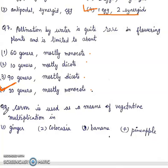Question 8. Corm is used as a means of vegetative multiplication in: 1. ginger, 2. colocasia, 3. banana, 4. pineapple. Right answer will be 2nd, colocasia.